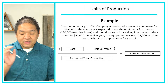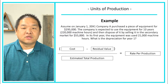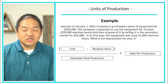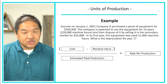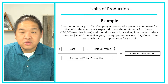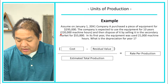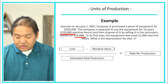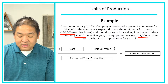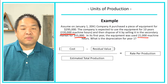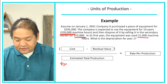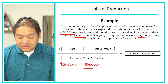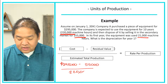Let's walk through an example with our equipment. The only difference here is they've given us machine hours. Instead of using a time span of 10 years, we're saying this machine is good for 220,000 machine hours. After 220,000 machine hours, it is expected that we dispose of or sell this asset. They expect to sell it in the secondary market for $55,000. In the first year, the equipment was used for 21,000 machine hours, and we need to calculate depreciation for year one.